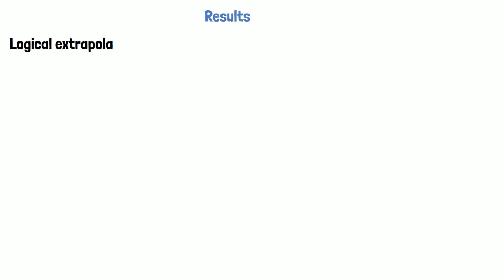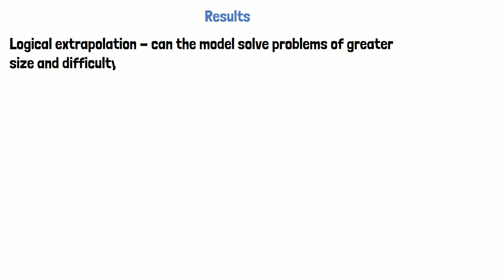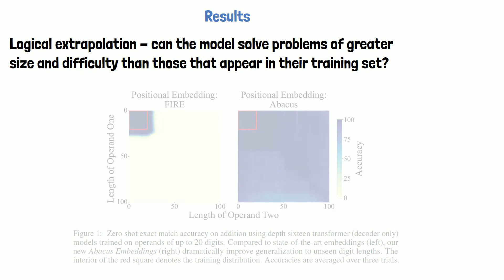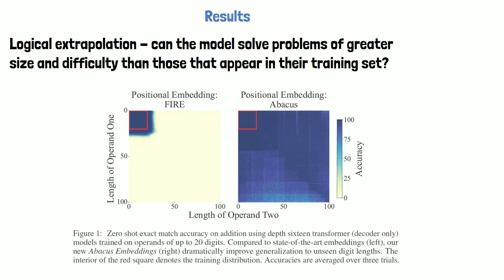Let's now take a look at how transformers perform when using abacus embeddings. We start with length extrapolation, which shows the most interesting result in this paper in my opinion. What we ask here is whether the model can solve problems of greater size and difficulty than those that appear in the model's training set. In the following figure from the paper we can see results for two transformers trained from scratch — one with the new abacus embeddings on the right, and one with FIRE embeddings on the left, which are the state-of-the-art embeddings for this task prior to this paper.